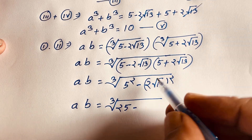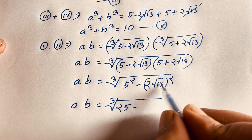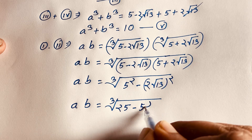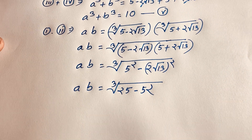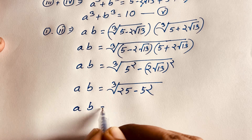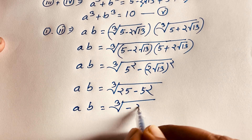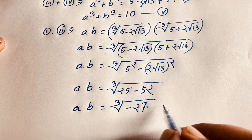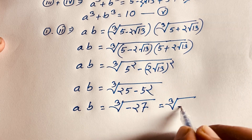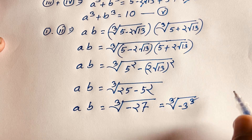So ab equals cube root of (5² minus (2)² times 13), which is cube root of (25 minus 52), which is cube root of negative 27. That equals cube root of (negative 3)³, and the cube root and cube cancel, giving ab equals negative 3. This is our sixth equation.